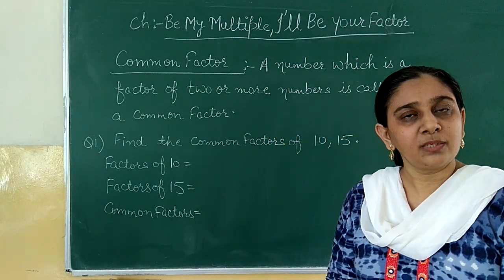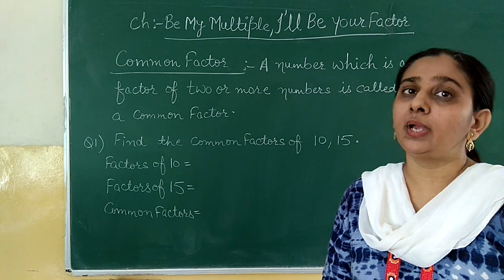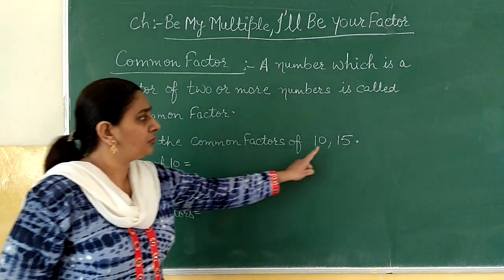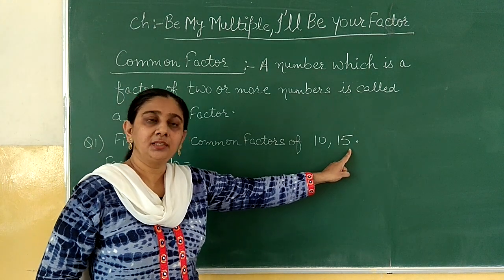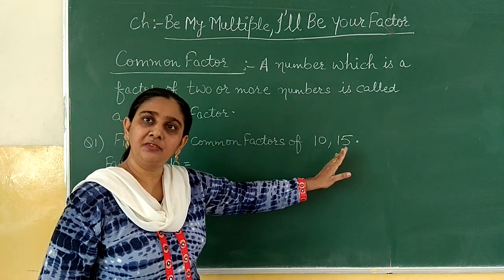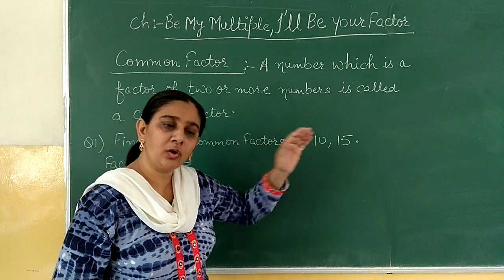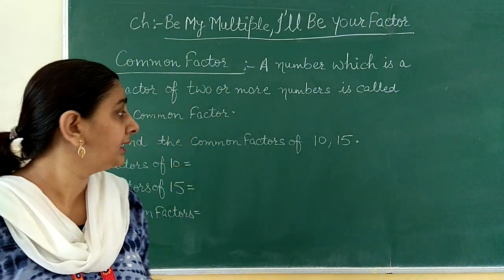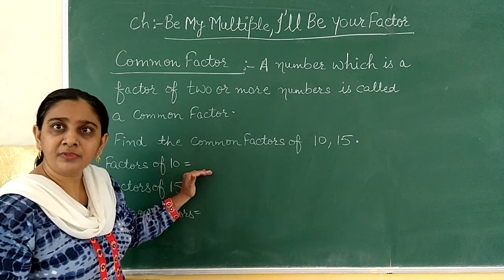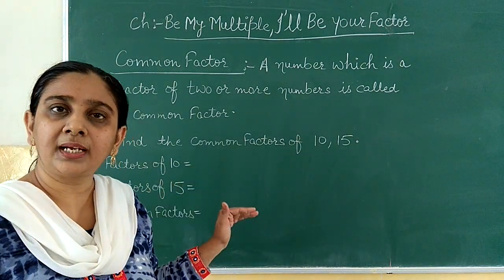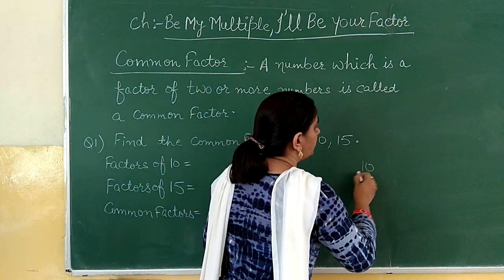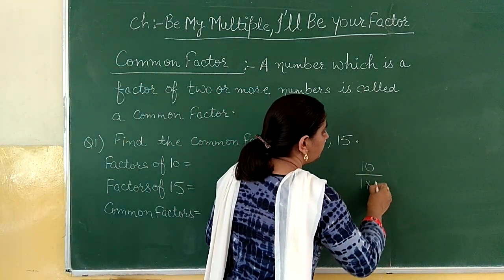Now let us understand the concept of common factors through an example. Find the common factors of ten and fifteen. Our two given numbers are ten and fifteen. For finding all the common factors of ten and fifteen, first of all we will write all the factors of ten. For writing all the factors of ten, we will write all those pairs of numbers whose product will give you ten.